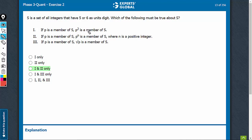If P is a member of S, P square is a member of S. Yes, any number that ends with a 5, its square will also end with a 5, no matter what the other digits are. So yes, if P is a member of S, P square is also going to be a member of S. That's correct.